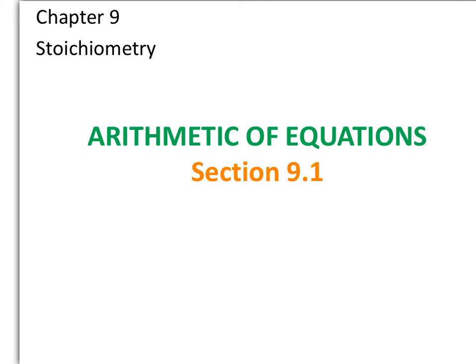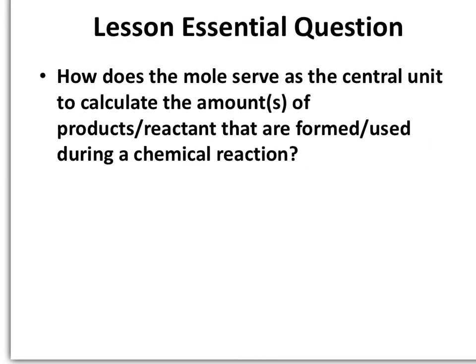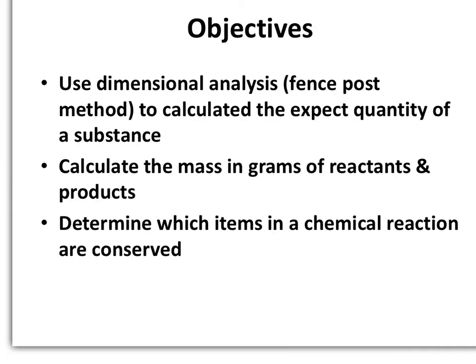In today's lesson we're going to start a new unit in chapter 9 of your textbook. The name of the unit is stoichiometry. Today our lesson is going to focus on arithmetic of equations, and you can find this information in section 9.1. The lesson essential question is: how does the mole serve as the central unit to calculate the amounts of products or reactants that are formed or used during a chemical reaction? Objectives include using dimensional analysis or the fence post method to calculate the expected quantity of a substance, calculate the mass in grams of reactants and products, and determine which items in a chemical reaction are conserved.